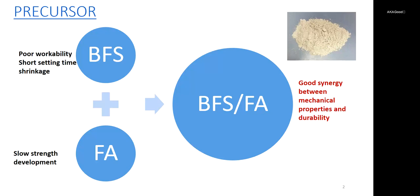As we know, alkali-activated materials have attracted more and more attention as a potential replacement for cement materials. The most popular precursors of alkali-activated materials are blast furnace slag and fly ash. Slag-based and fly ash-based alkali-activated materials are both known to have some disadvantages, such as poor workability, short setting time, shrinkage, and slow strength development. A large amount of research has shown that good synergy between mechanical property and durability could be obtained by adding fly ash in slag-based alkali-activated materials.